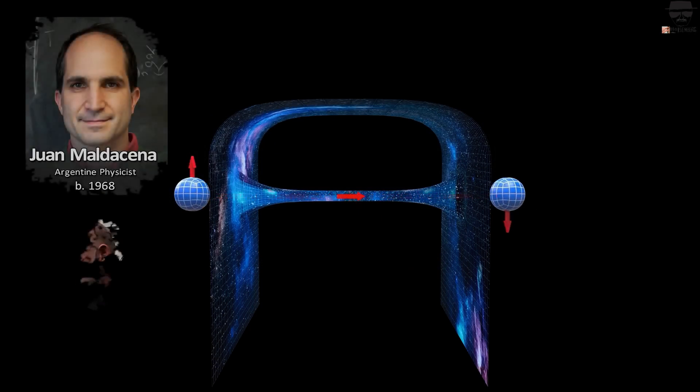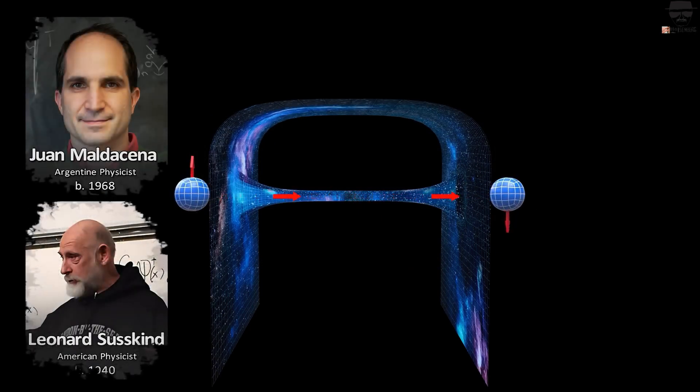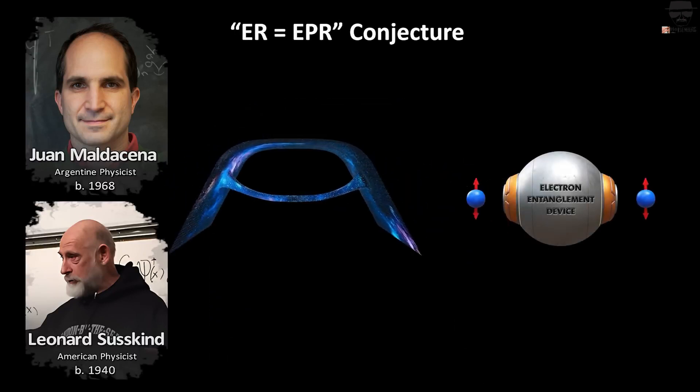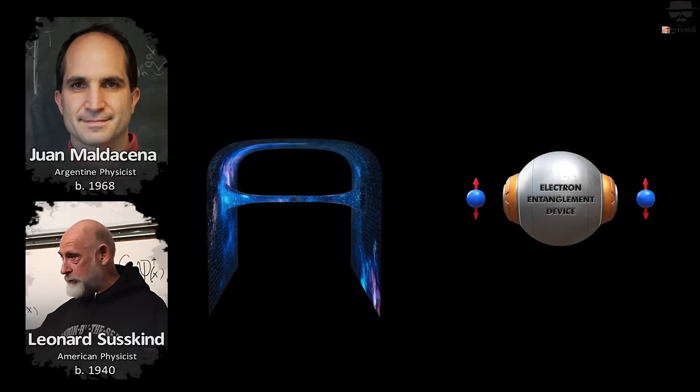Two physicists, Juan Maldacena and Leonard Susskind, are often mentioned as having made some of the more crucial contributions to this realization, and it was Maldacena who coined the succinct representation of the observation.